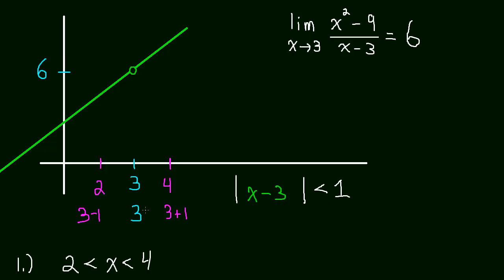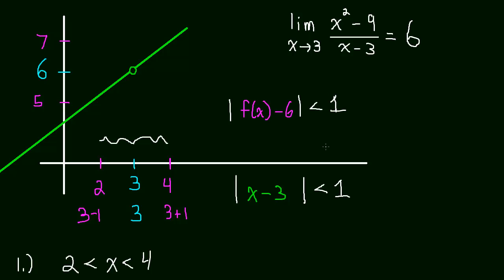This tells us that if you want x to be within 1 unit of 3, you write: the absolute value of x minus 3 is less than 1. Notice we can do the exact same thing with the f of x values. If we want to force f of x to be between 5 and 7, we end up with: the absolute value of f of x minus 6 is less than 1. You can verify that by going through the exact same process we did for x. See you in the next video!